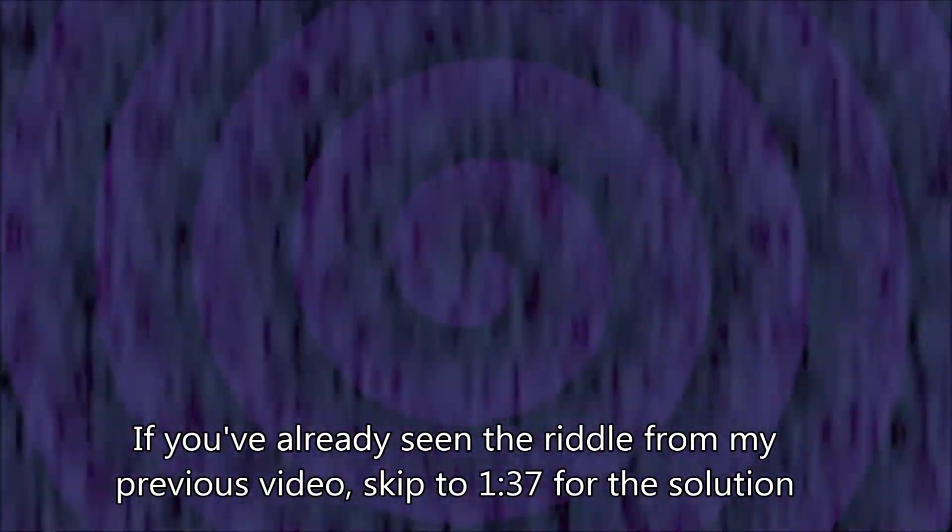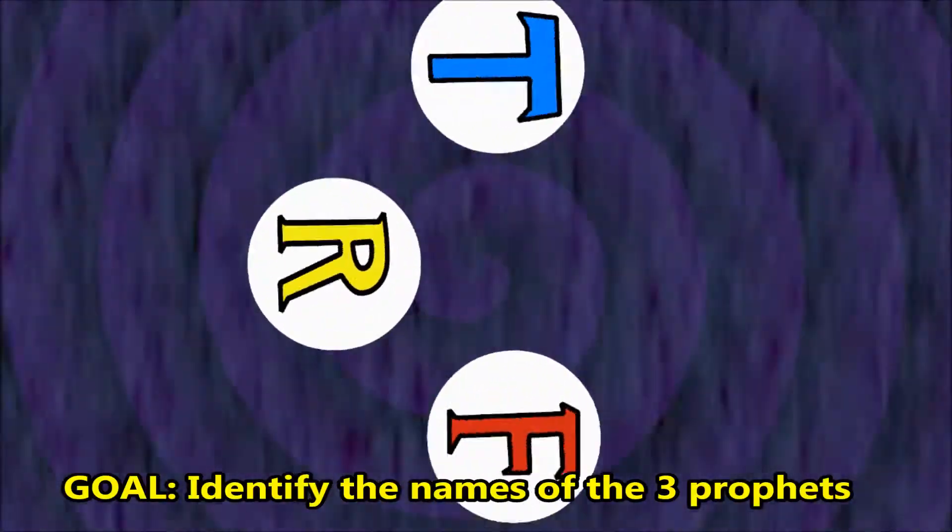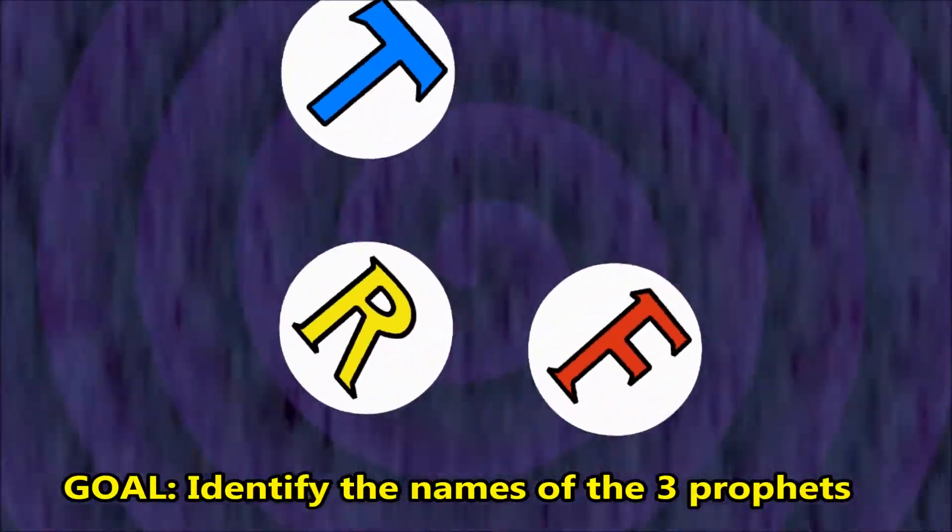You are teleported into an alternate dimension with three prophets. To escape, you must correctly identify the names of the three prophets.